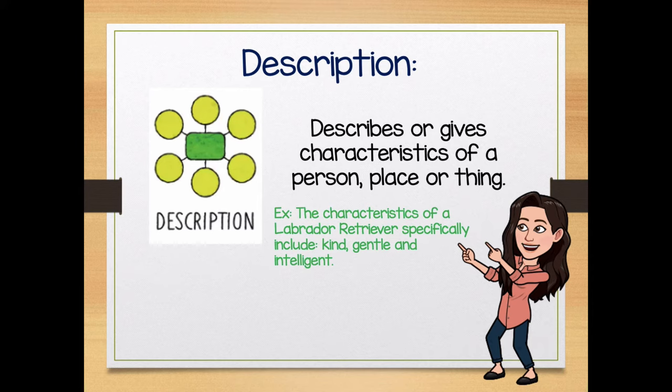For an example, the author might say, 'The characteristics of a Labrador Retriever specifically include kind, gentle, and intelligent.' Now I have a picture in my mind of a Labrador Retriever, either a puppy or a grown dog, and that dog is kind, gentle, and intelligent, giving me more of a description of what a Labrador Retriever is like.